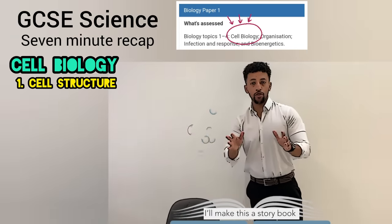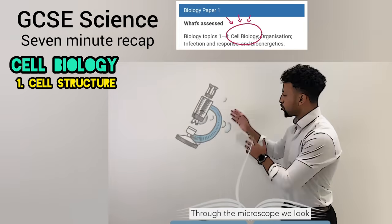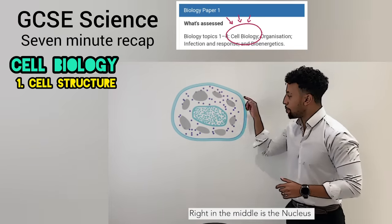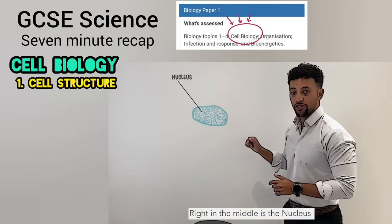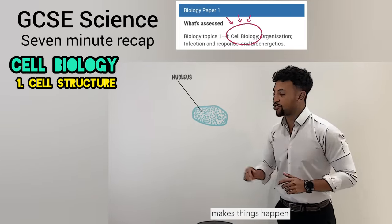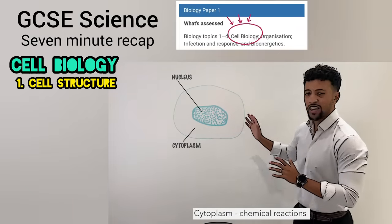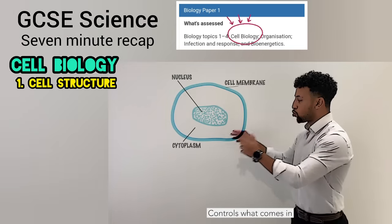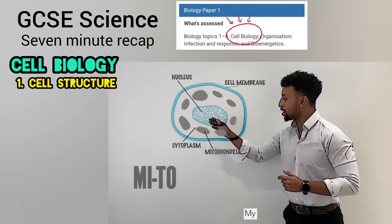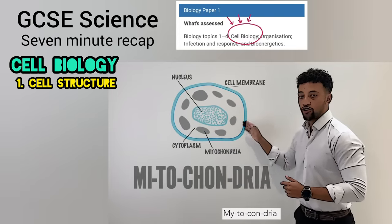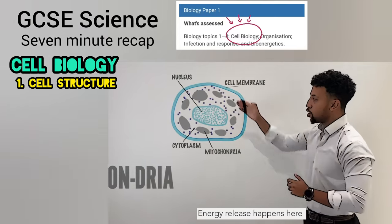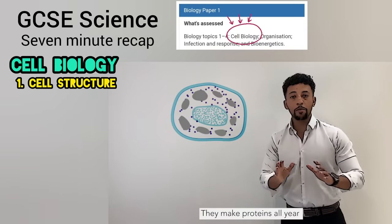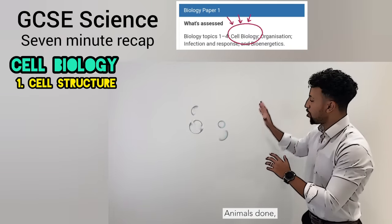I'll make this a storybook, through the microscope we look — animal and plant cell structure is easy. Right in the middle is the nucleus, that's the part that makes things happen. Cytoplasm? Chemical reaction. Cell membrane, it goes all around, controls what comes in and comes out. Now mitochondria — energy release happens here. Ribosomes are near, they make proteins all year.